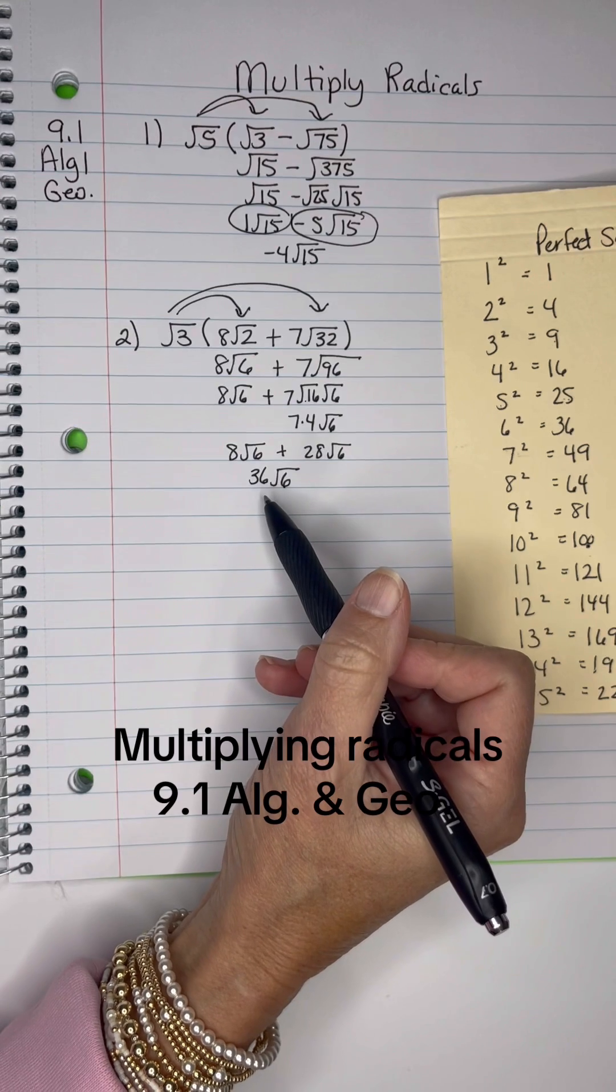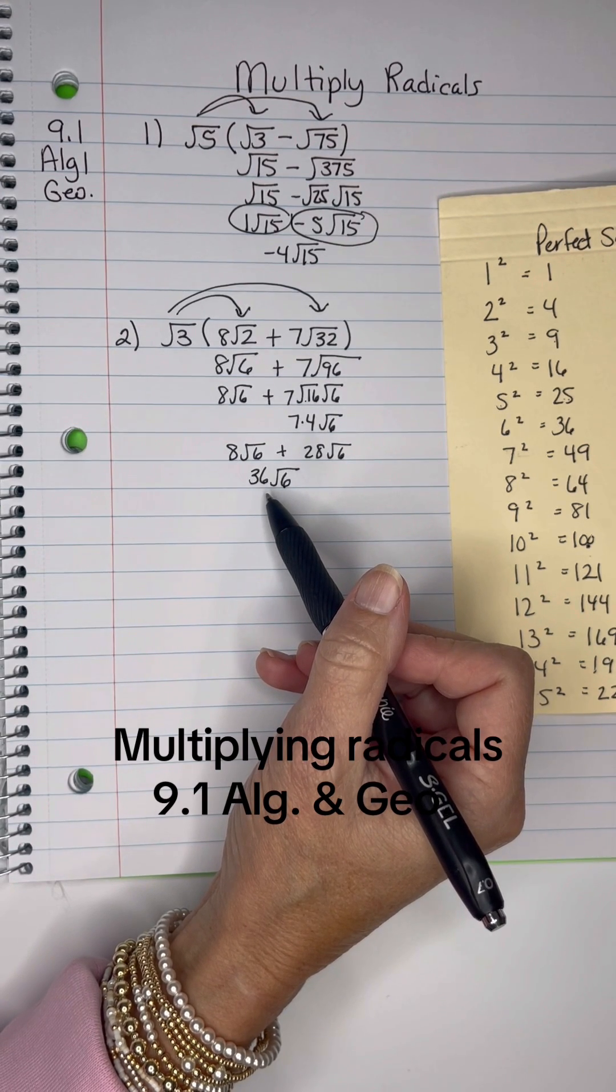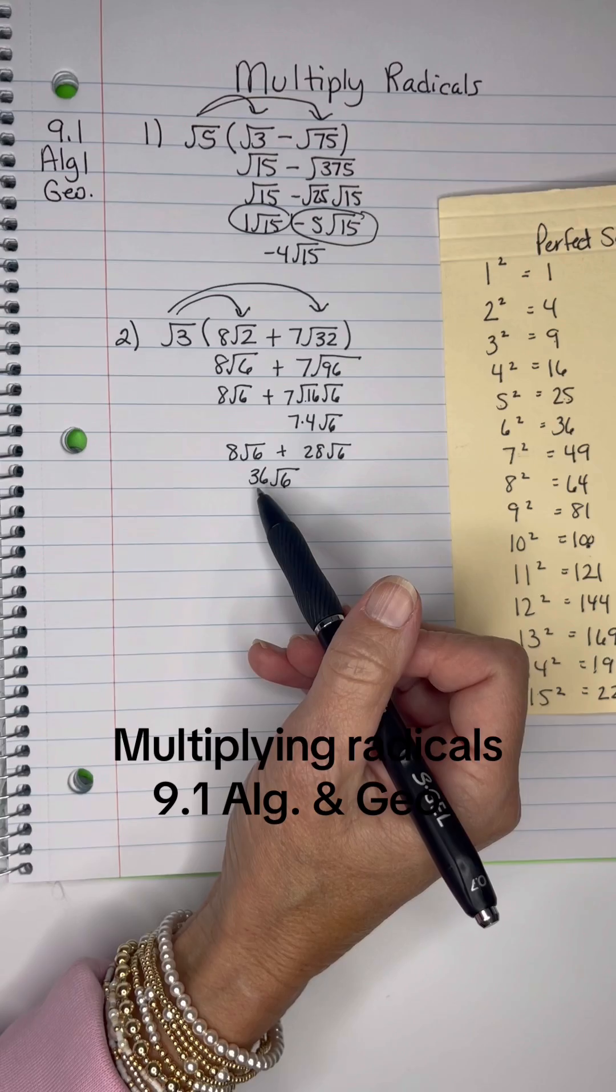Now I know 36 is perfect, and sometimes students will try to make that a 6, but there's no radical sign above that so you do not do so.